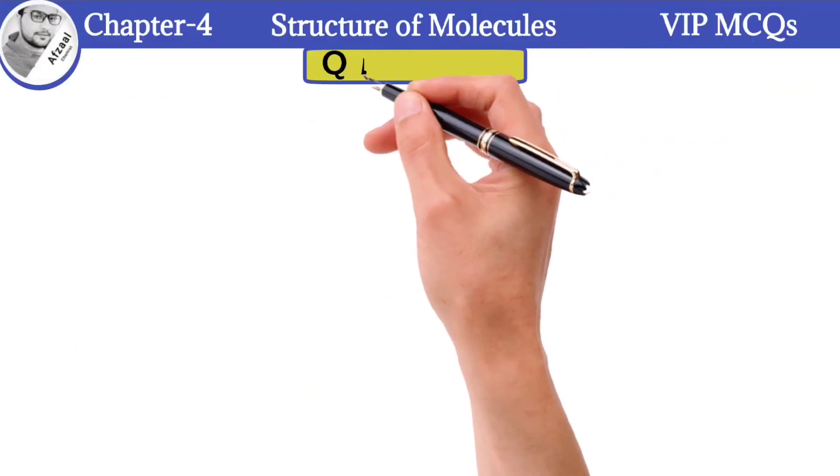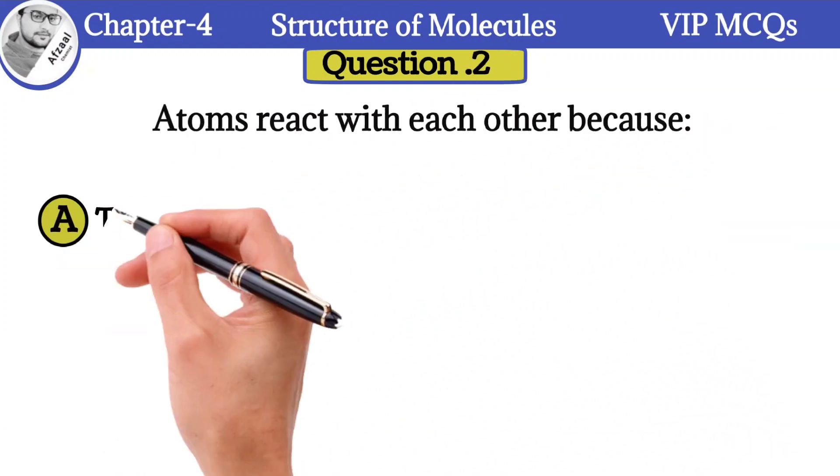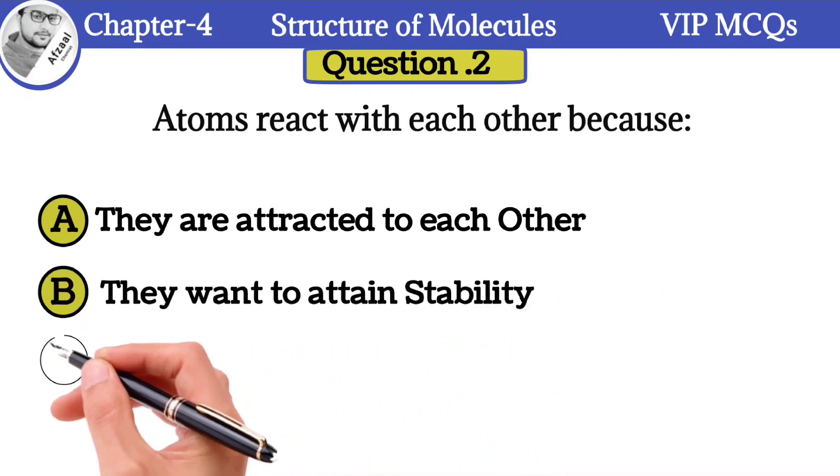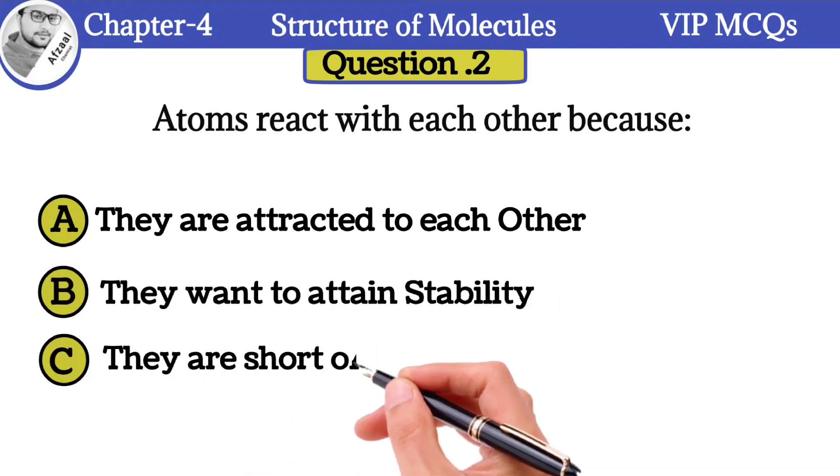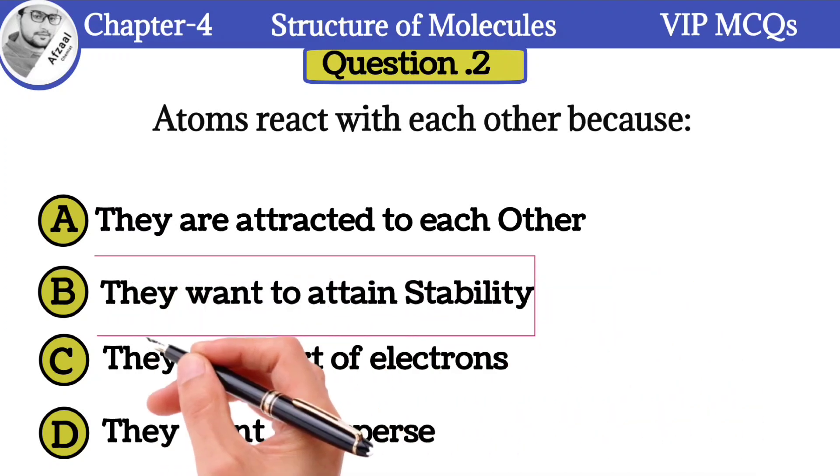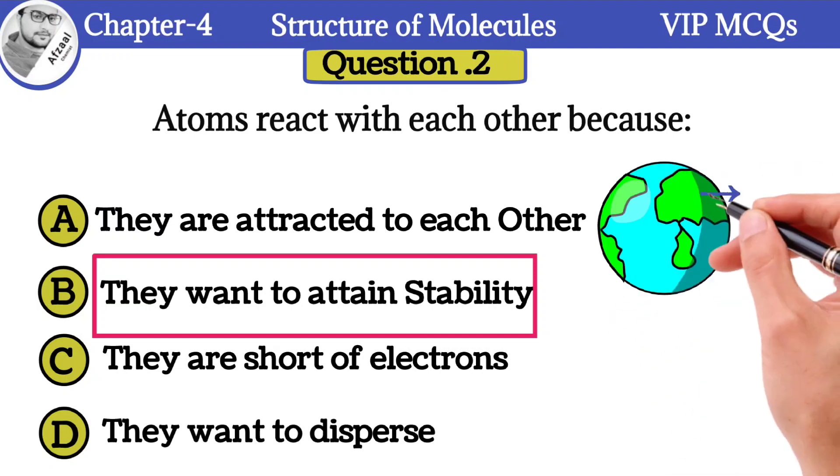Question number 2: Atoms react with each other because: A) They are attracted to each other, B) They want to attain stability, C) They are short of electrons, D) They want to disperse. The correct option is: atoms react with each other to attain stability. It is a universal rule that everything in this world tends to become more stable. Atoms also tend to become stable by reacting with other atoms.